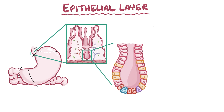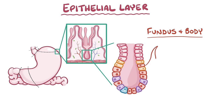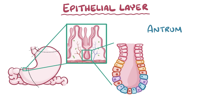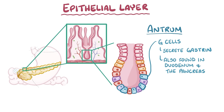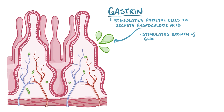The cardia has mostly foveolar cells that secrete mucus, which is mostly made up of water and glycoproteins. The fundus and body have mostly parietal cells that secrete hydrochloric acid, and chief cells that secrete pepsinogen, which is an enzyme that digests protein. The antrum has mostly G cells that secrete gastrin in response to food entering the stomach. These G cells are also found in the duodenum and pancreas. Gastrin stimulates the parietal cells to secrete hydrochloric acid and also stimulates the growth of glands in the epithelial layer.